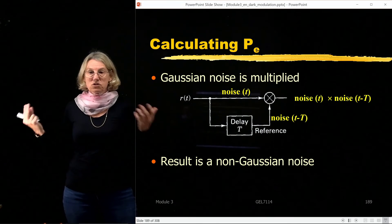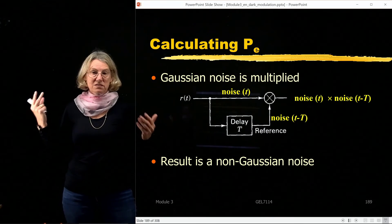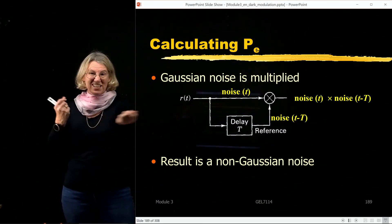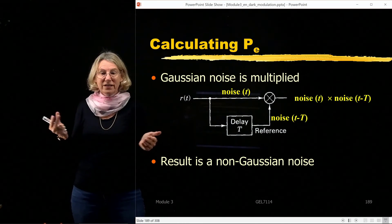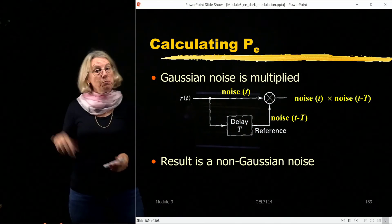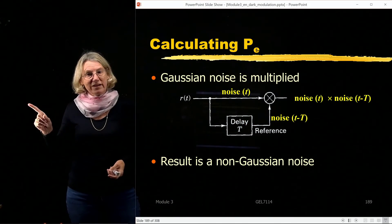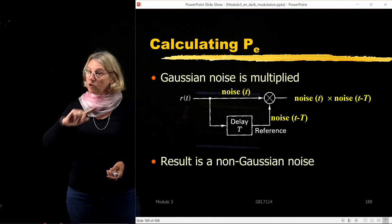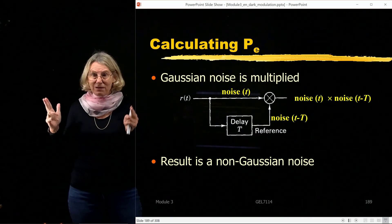So I know that these are two independent noise samples because it's Gaussian noise. This is Gaussian noise, and I know that once I delay them, they're completely uncorrelated, they're independent, but I multiply them together. And if you multiply a Gaussian random variable with a Gaussian random variable, you do not get a Gaussian random variable.